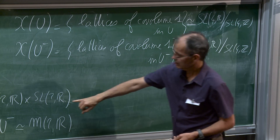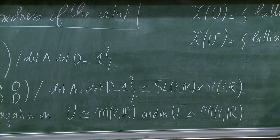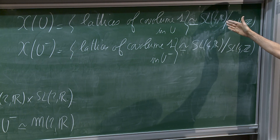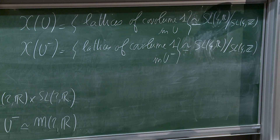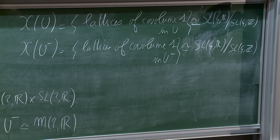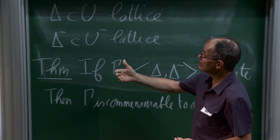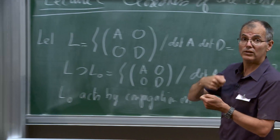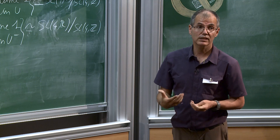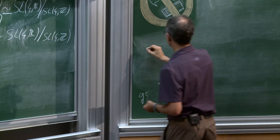Both X(U) and X(U⁻) are spaces of lattices in a four-dimensional space. So both are the space SL₄(ℝ)/SL₄(ℤ), which acts on dimension 4 and the stabilizer of a lattice is SL₄(ℤ). This group L₀, which has dimension 3+3=6, acts on the space SL₄(ℝ)/SL₄(ℤ) of dimension 15, which has finite volume — we have seen this by Minkowski. The problem we are asking is invariant under conjugation by L₀.